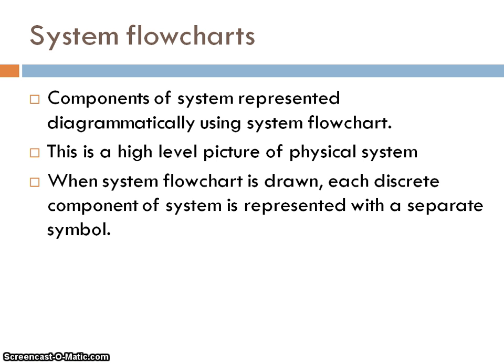The components of the system basically need to be represented diagrammatically. The flowcharts are not for the algorithms, they're not for each of the individual processes that take place, but it's a high level picture of the physical system. When the system flowchart is drawn, each discrete component of a system is represented with different symbols.